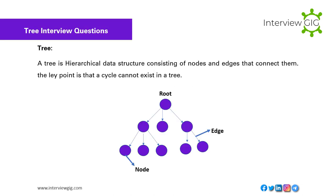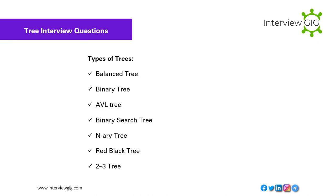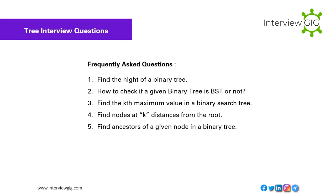Tree interview questions: A tree is a hierarchical data structure consisting of nodes and edges that connect them. A key point is that a cycle cannot exist in a tree. Types of trees: balanced tree, binary tree, AVL tree, binary search tree, N-ary tree, and red-black tree. Frequently asked questions: 1. Find the height of a binary tree. 2. Check if a given binary tree is a BST or not. 3. Find the Kth maximum value in a binary search tree. 4. Find nodes at K distances from the root. 5. Find the ancestors of a given node in a binary tree.